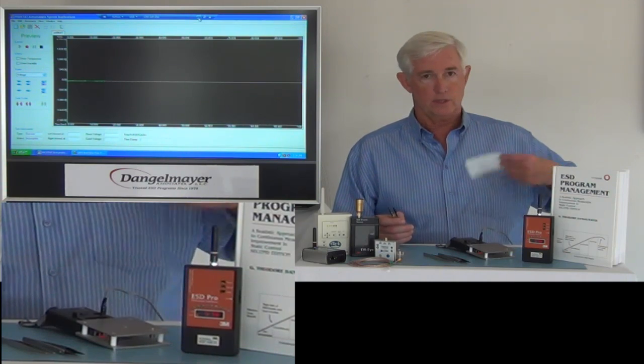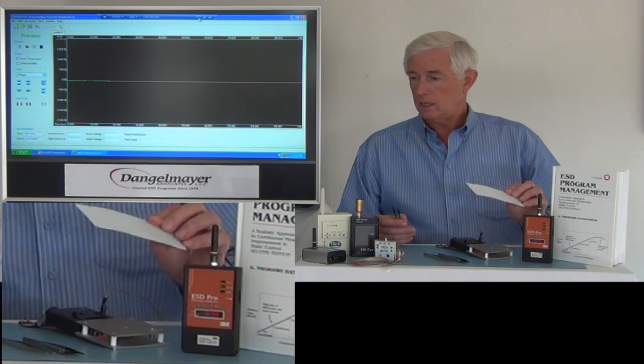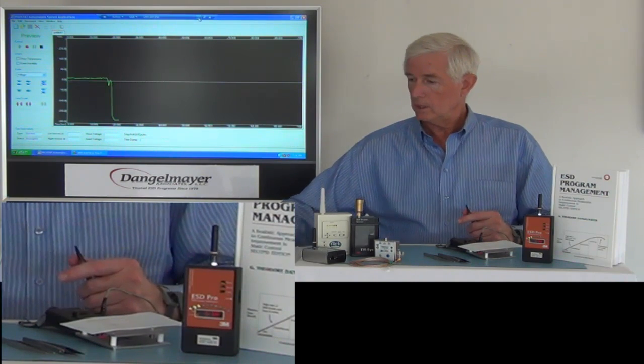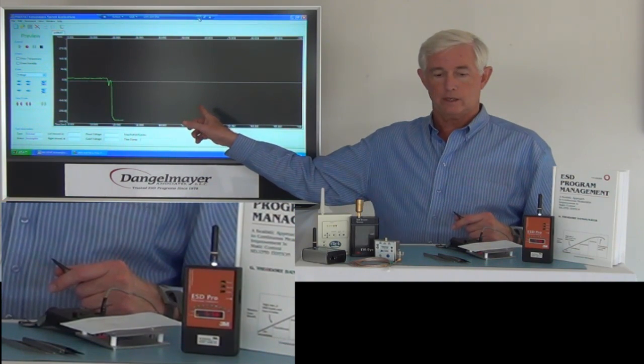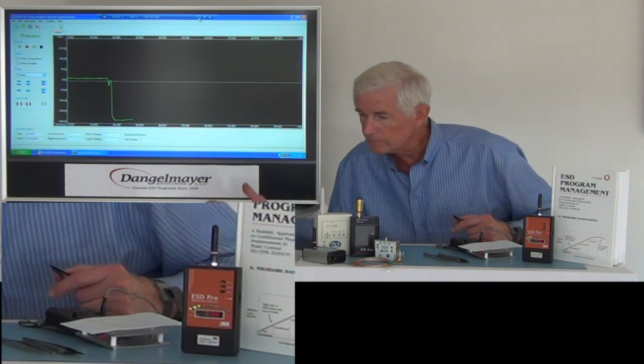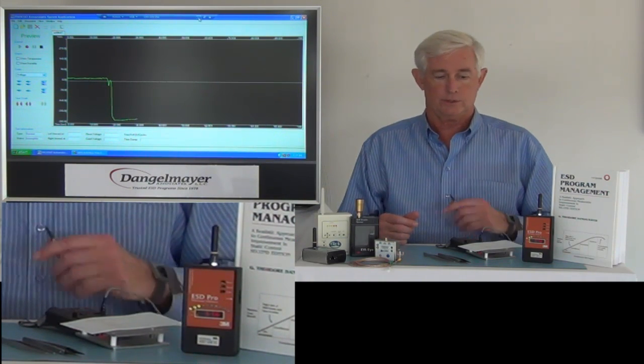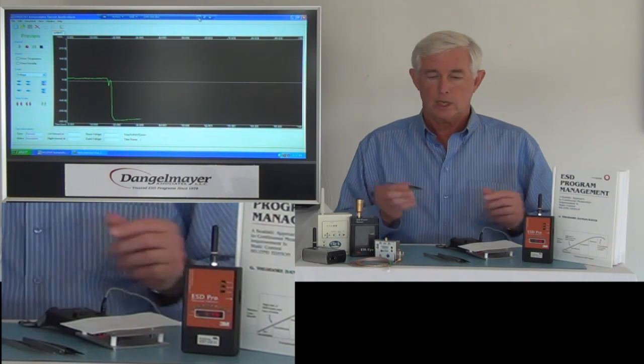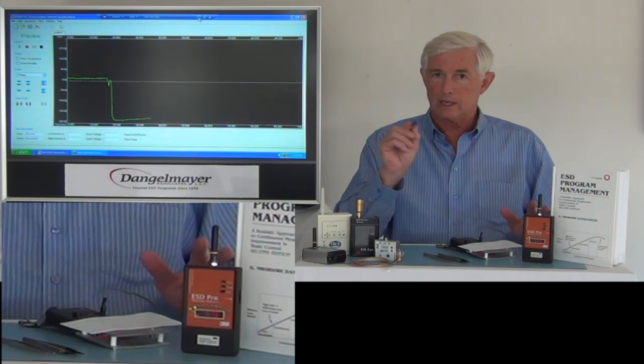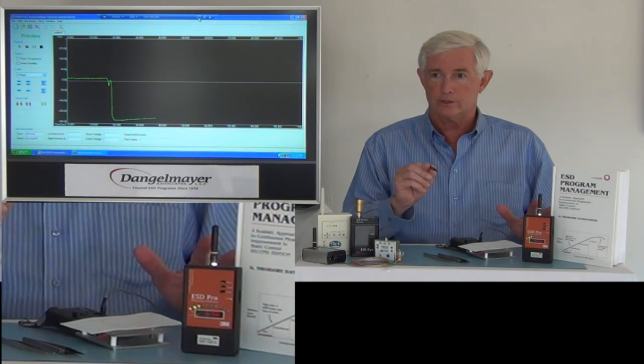I'm going to use this effective pair of tweezers that we spoke of in another demonstration. So I'm going to charge the insulator and place it on the surface. Now you can see on the scale here that we have about 300 volts, not a huge source, but what I'm going to do now is discharge it with this pair of tweezers.